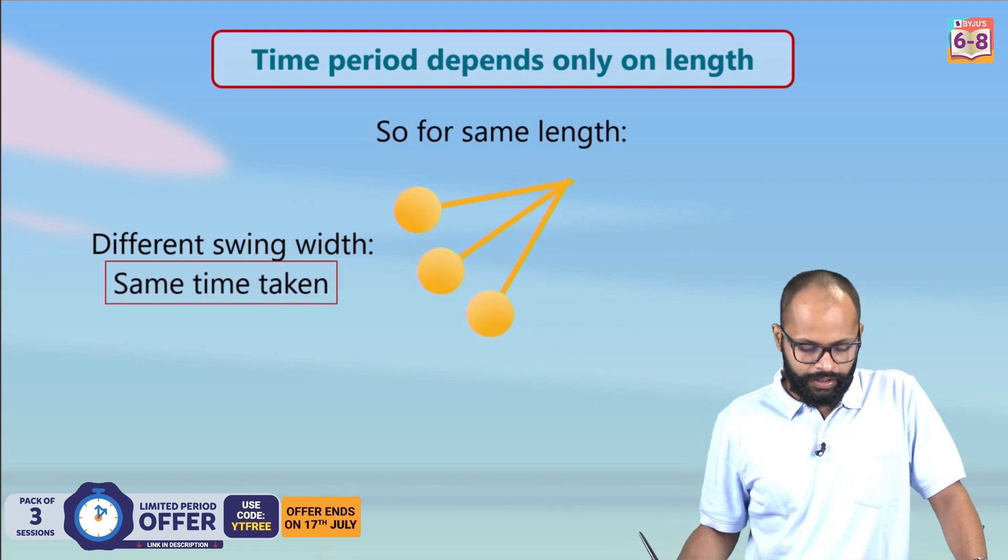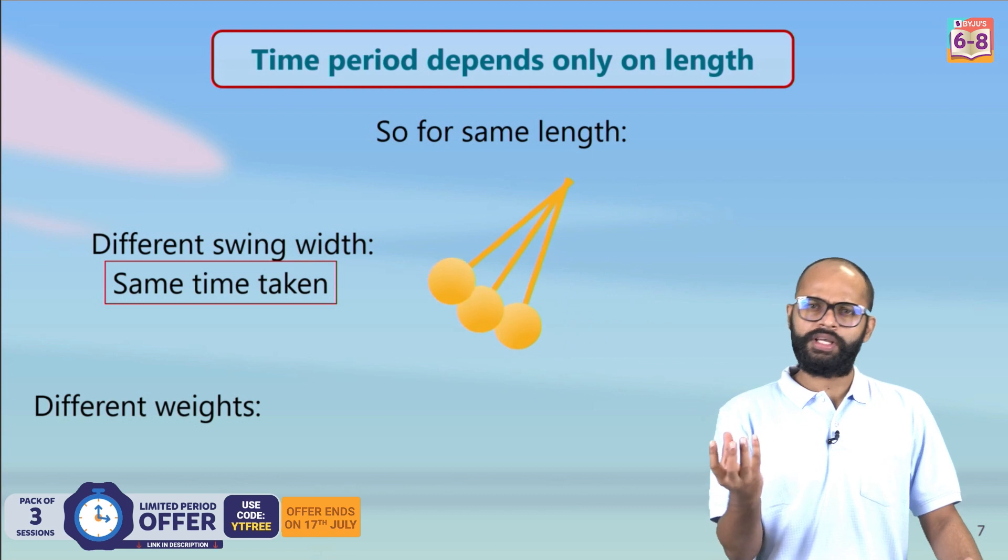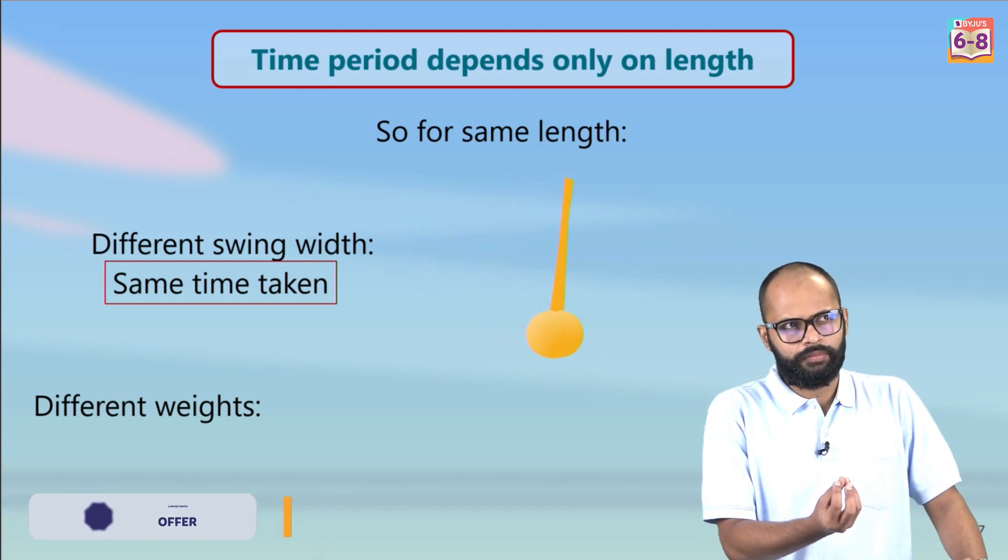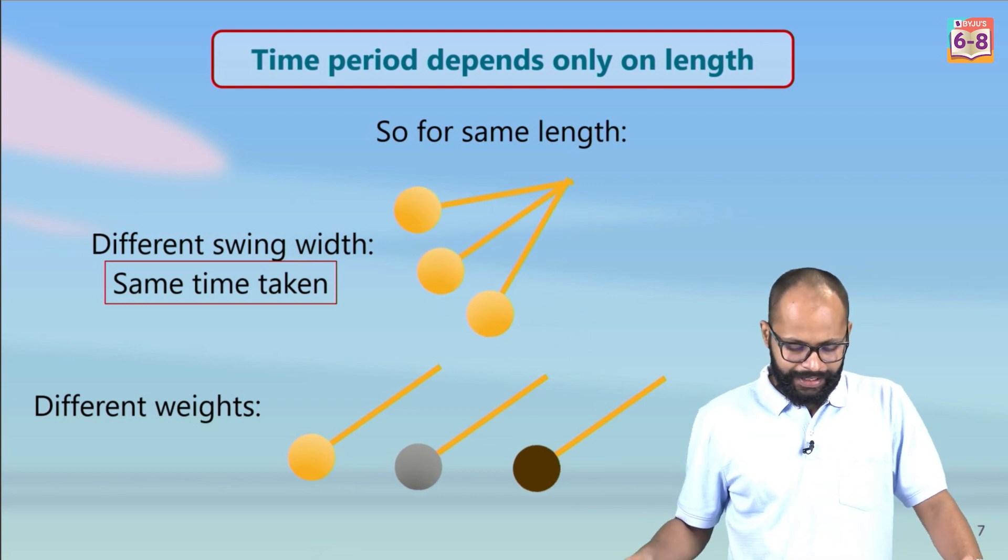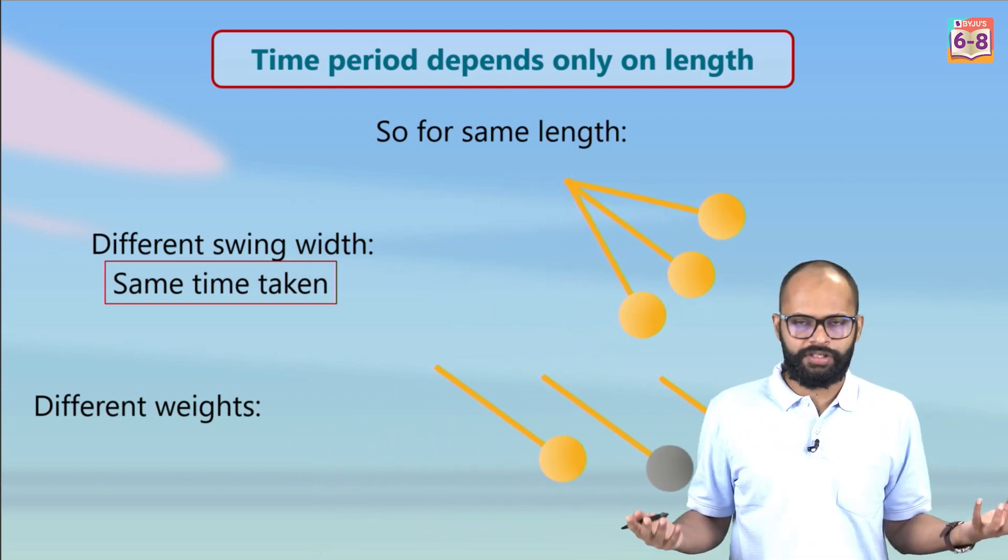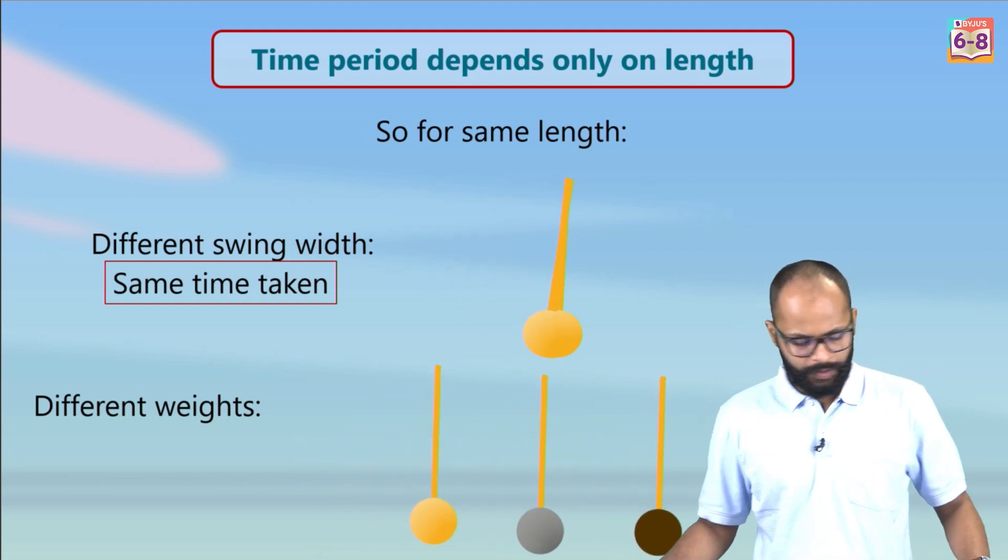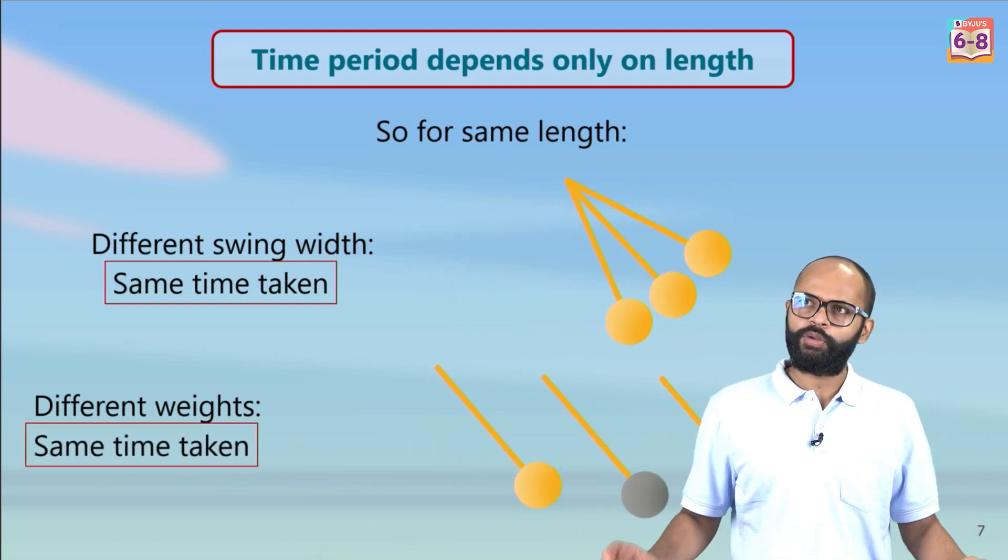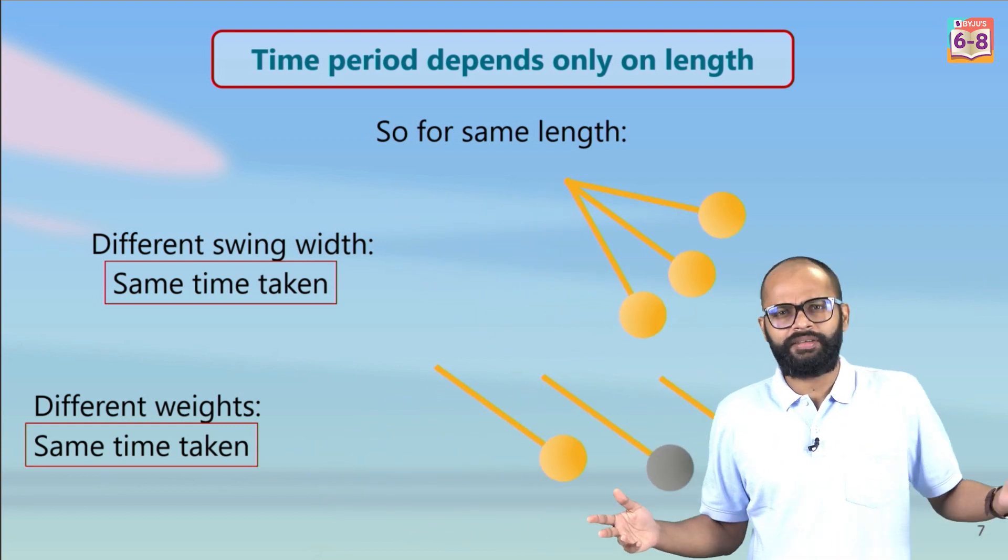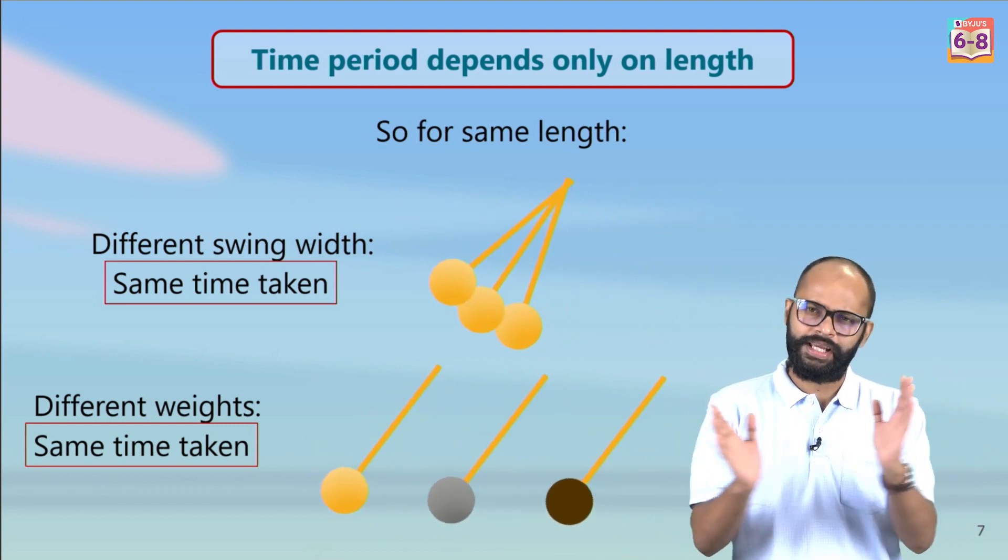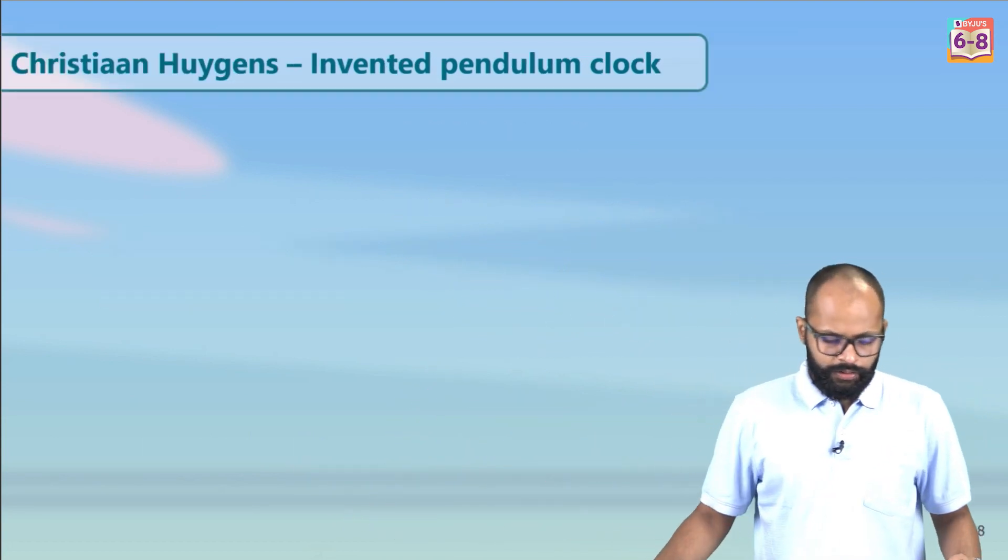The same time is taken. Let's see different weights. If I use a heavier bob or a lighter bob, would it matter? It won't. We have seen this also. It doesn't matter what is the weight of the bob you are using, the time period will still remain the same. All right, good. So it only depends on length. Yes, gravity also, but if you are on Earth I wouldn't worry about that. Yes, I would say fine, just think about length.